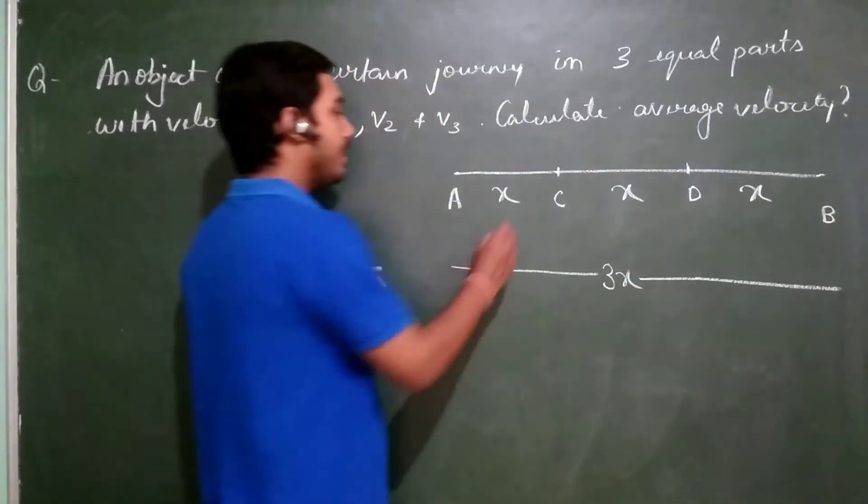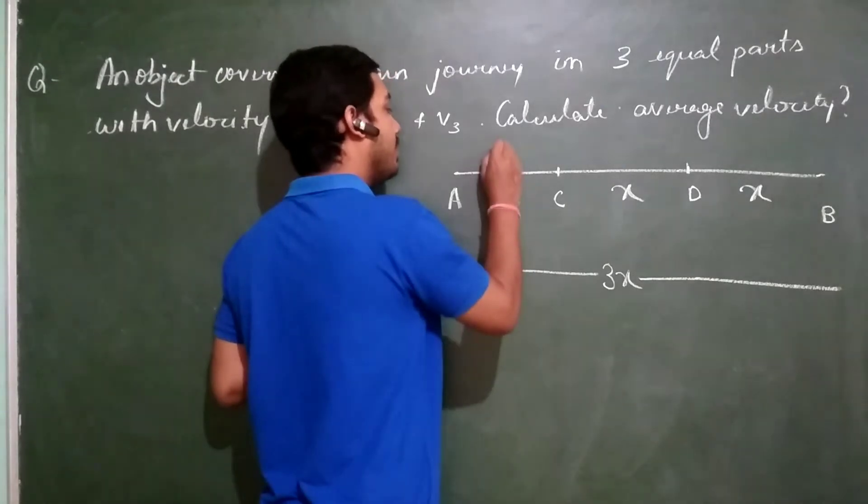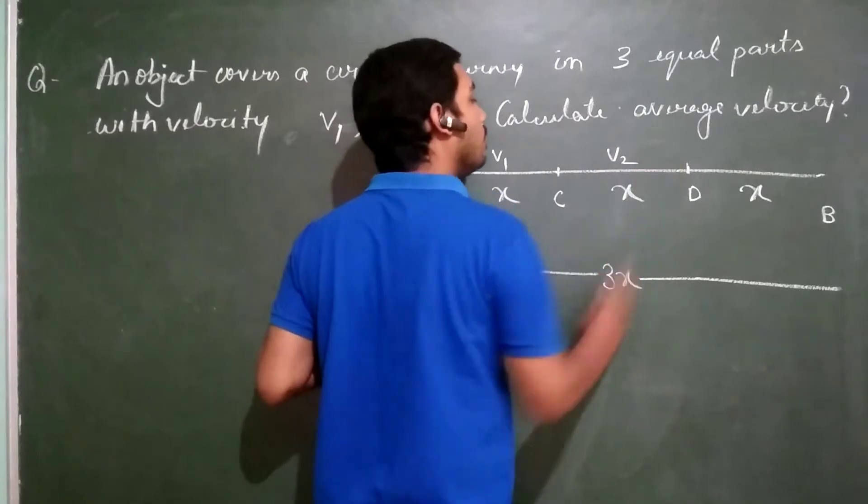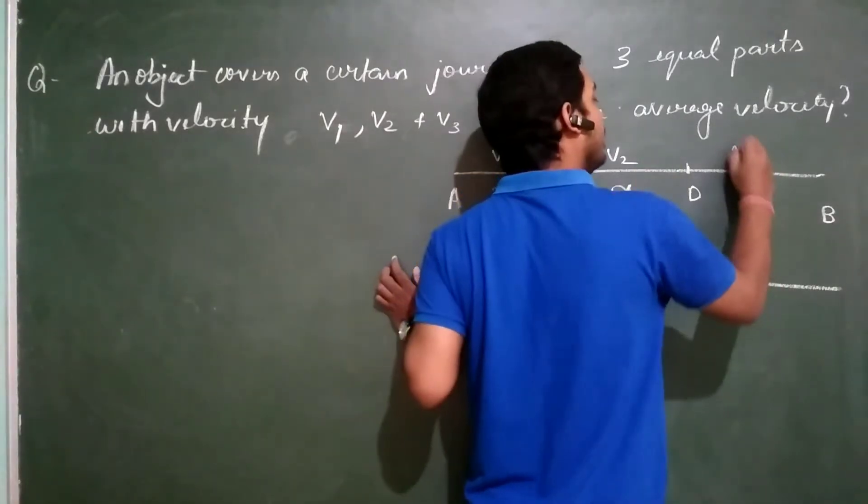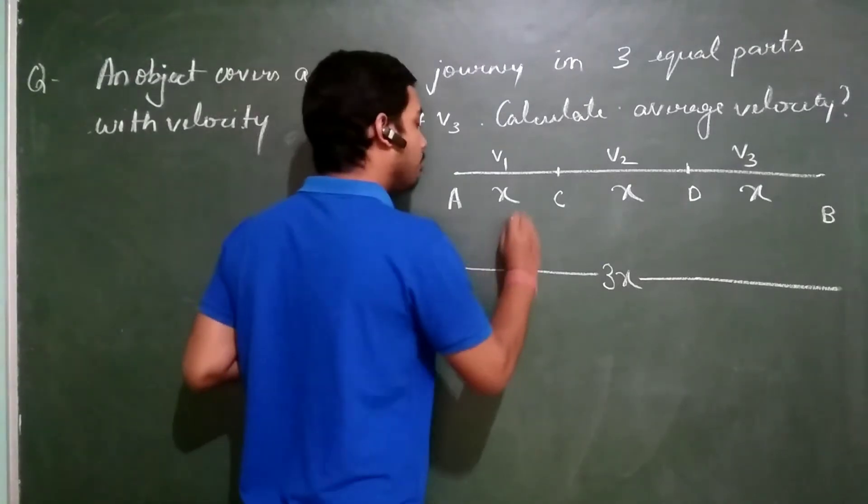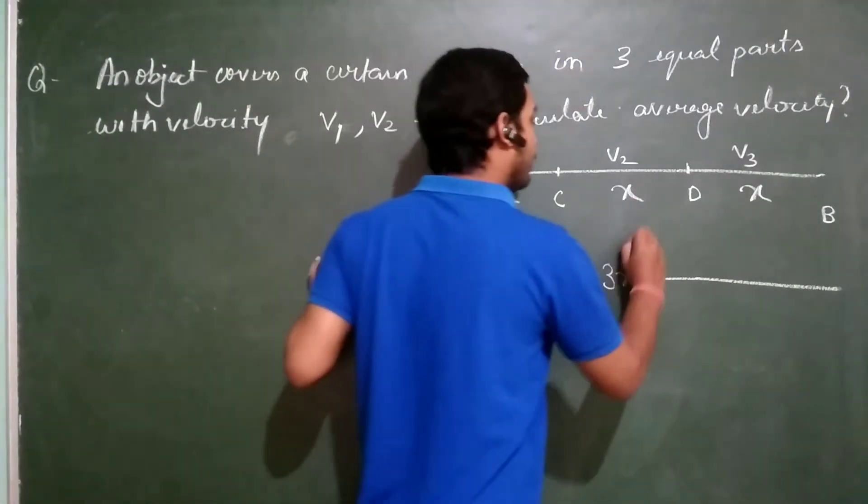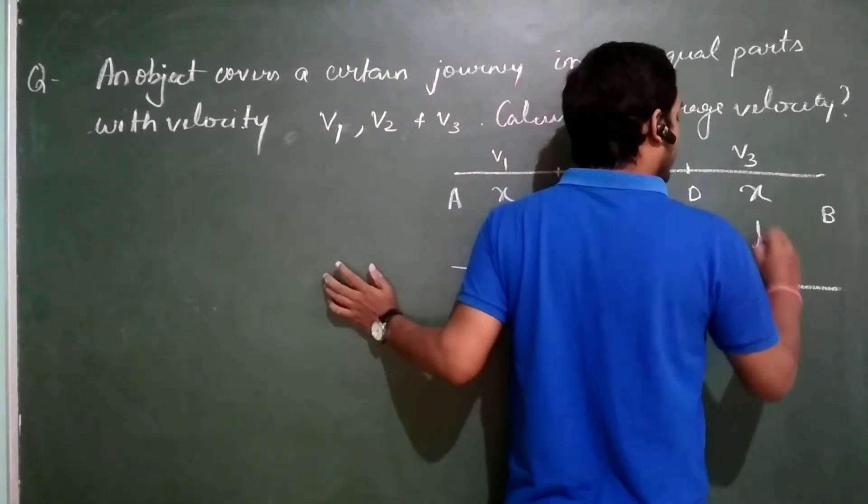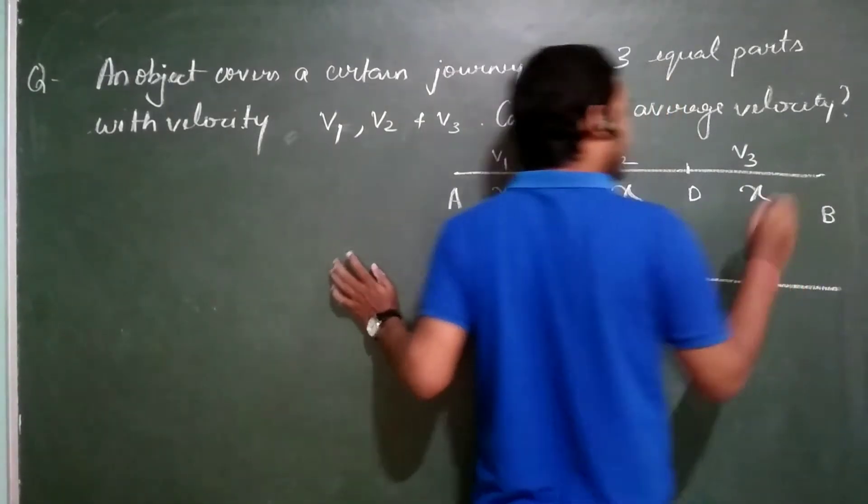Now we will take velocity for this period V1, for C to D is V2, for D to B is V3, time taken from A to C is T1, time taken from C to D is T2, time taken from D to B is T3.